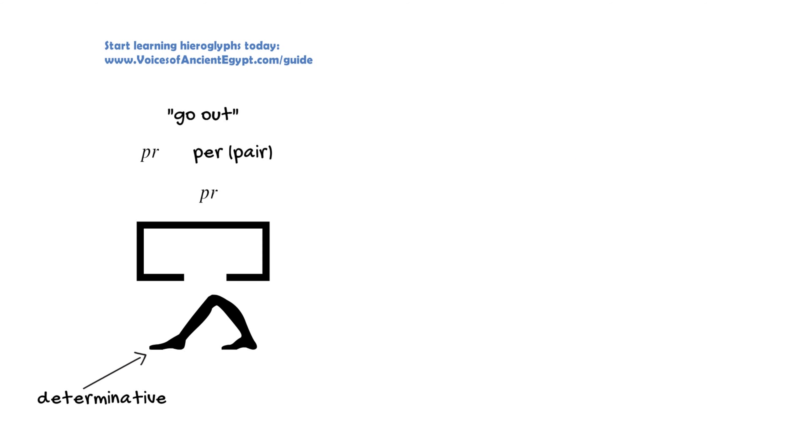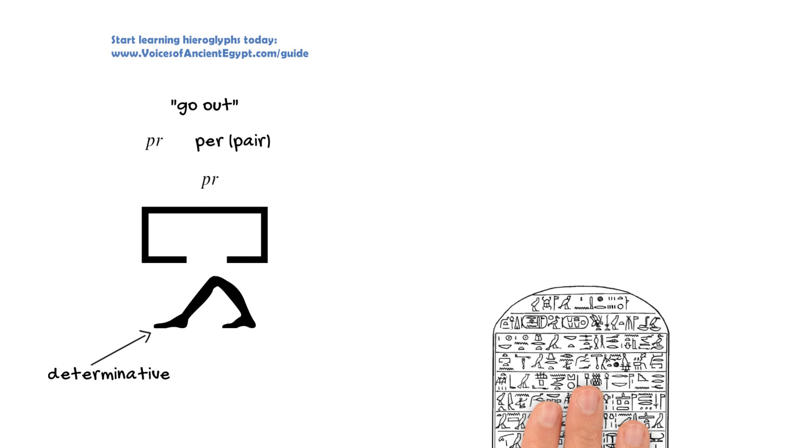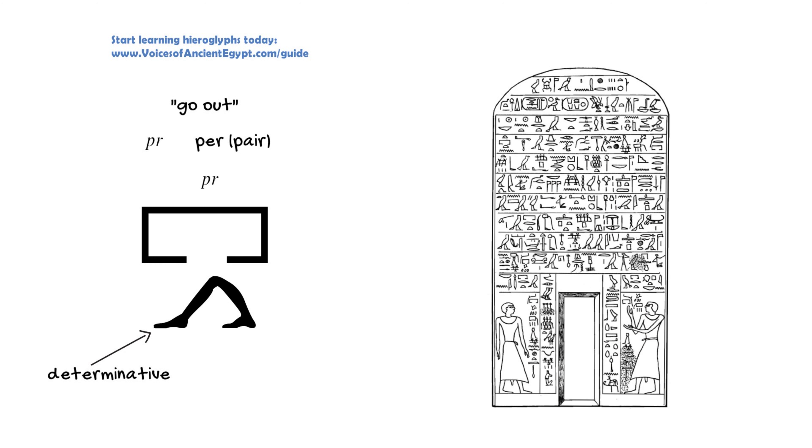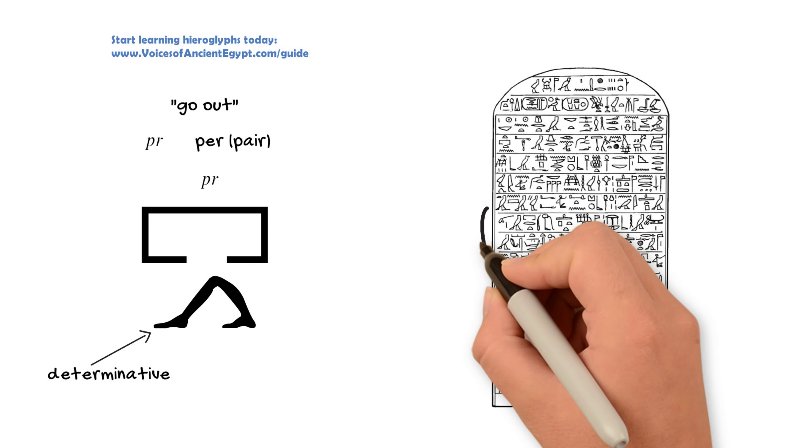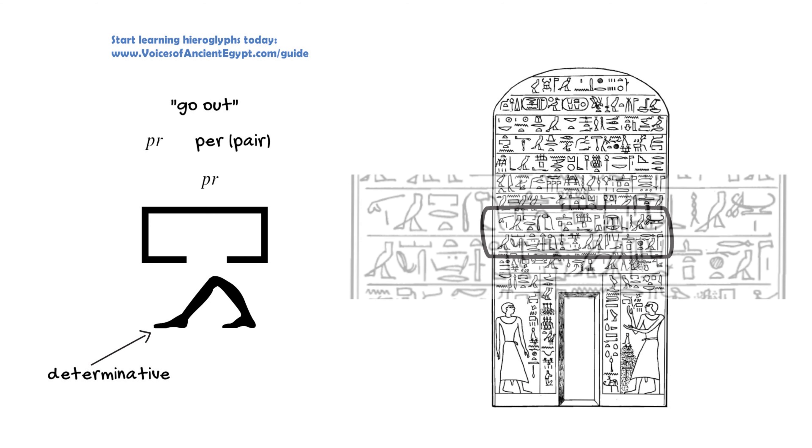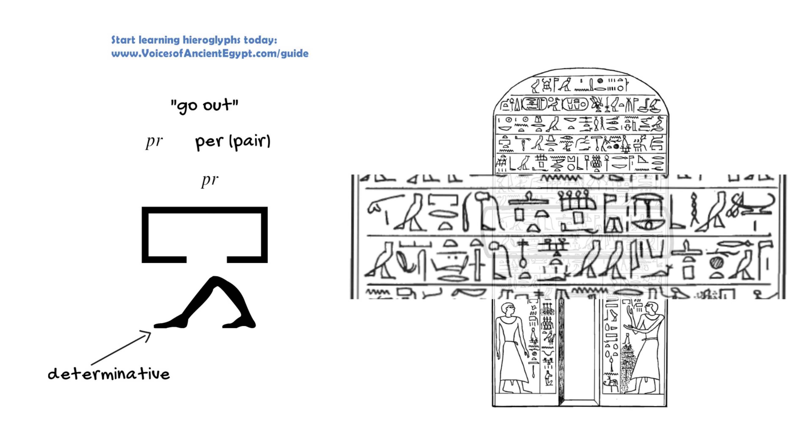In addition to the use of having it be this marker for a logogram, oftentimes this dash will be used just as a space filler. The ancient Egyptians were very concerned with the aesthetics of hieroglyphs and didn't want to have any awkward empty spaces or gaps.